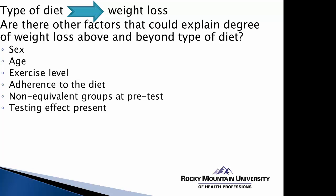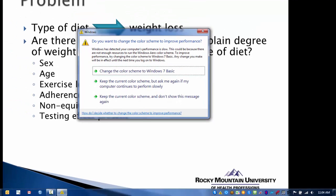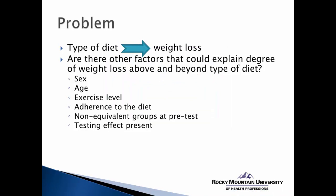But perhaps the groups, as they are determined, were non-equivalent to start with — so maybe one group is heavier than the other groups and therefore has more potential weight loss. Perhaps there's a testing effect present — maybe their weight loss may change just because of the testing process, and that might not be the case in this example.